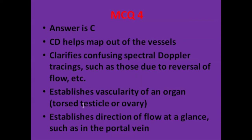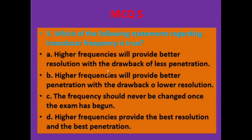Color Doppler helps map out vessels, clarifies confusion in spectral Doppler tracing such as those due to reversal of flow, establishes vascularity of an organ in question — like a torsed testicle or ovary — and establishes direction of flow at a glance, such as in the portal vein.